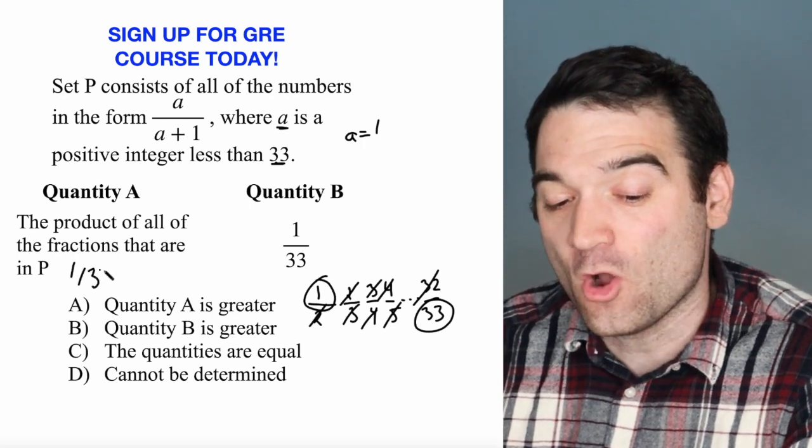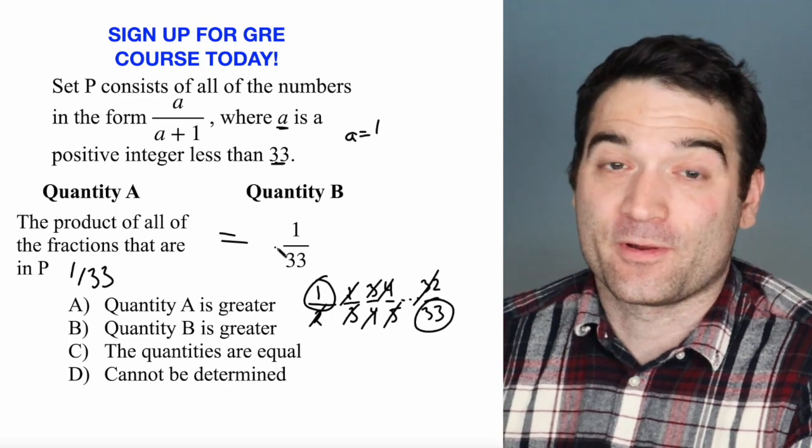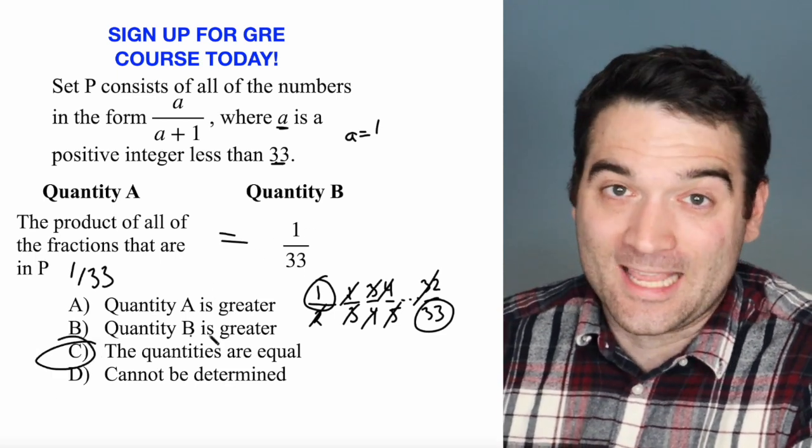So what I get is 1 over 33 for quantity A, and what I get here is 1 over 33, meaning that these two quantities are equal.